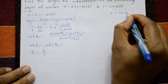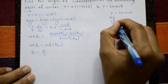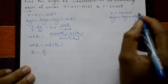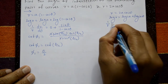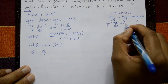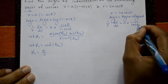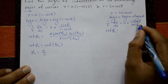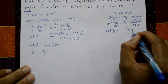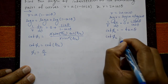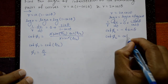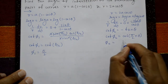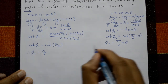Second curve: R = 2a cosθ. Taking log on both sides: logR = log2a + log(cosθ). Differentiating: (1/R)·(dR/dθ) = −sinθ/cosθ = −tanθ, and this is cotφ₂. Since −tanθ means cot(π/2 + θ), therefore φ₂ = π/2 + θ.